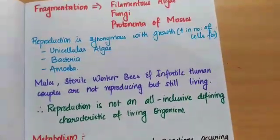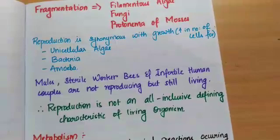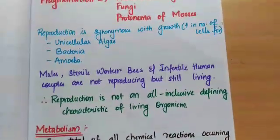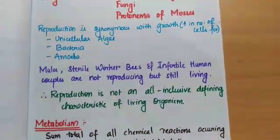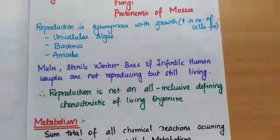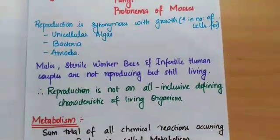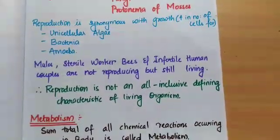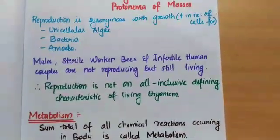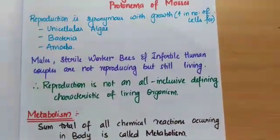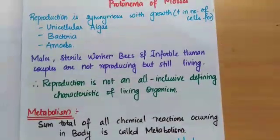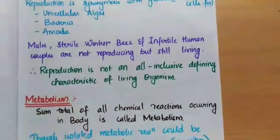In mules, sterile worker bees, and infertile human corpus, they are not reproducing but still they are living. Therefore, reproduction is not an all-inclusive defining characteristic of a living organism.